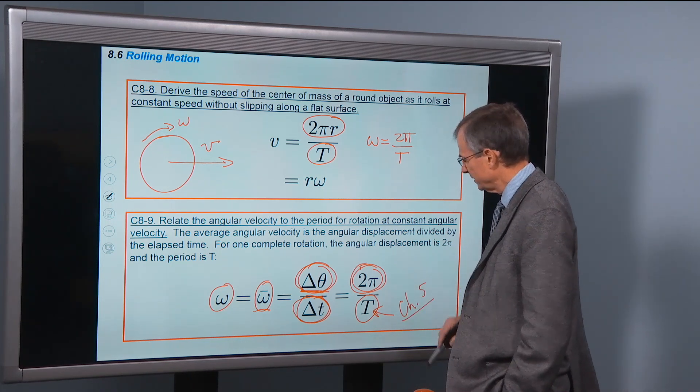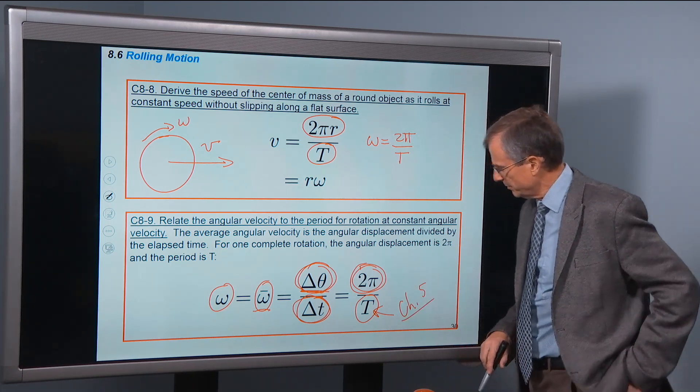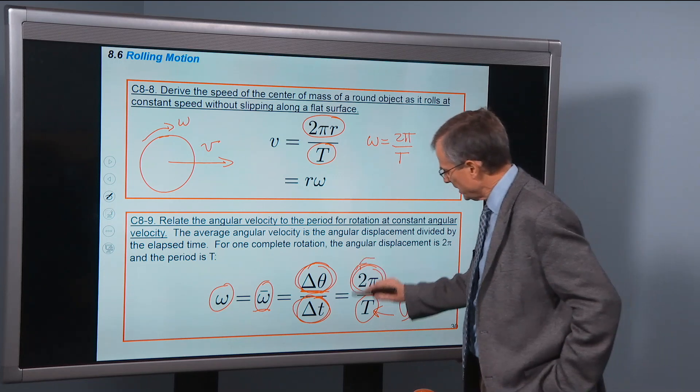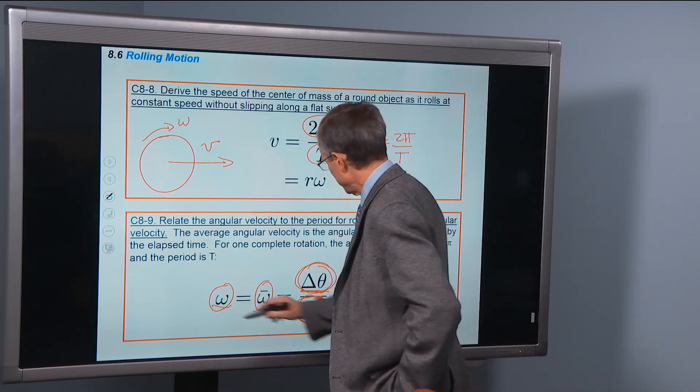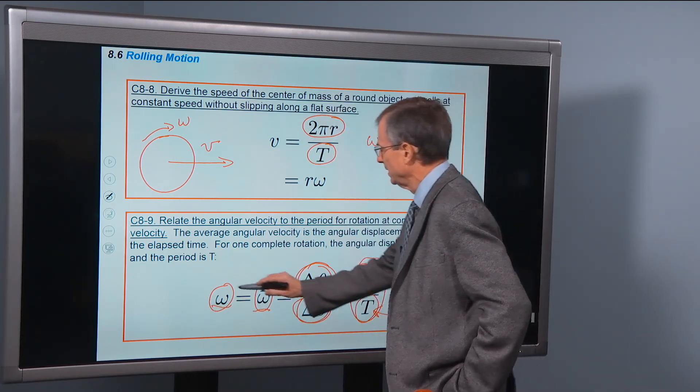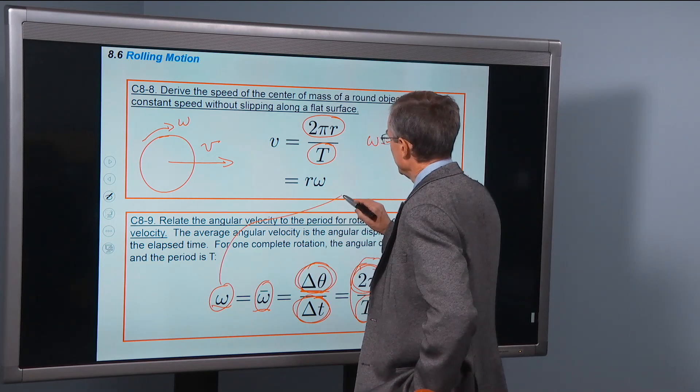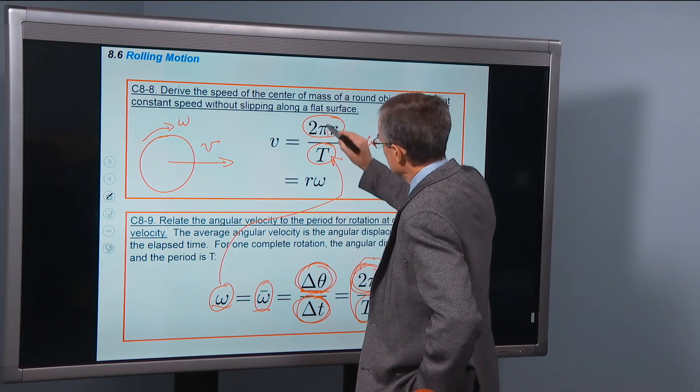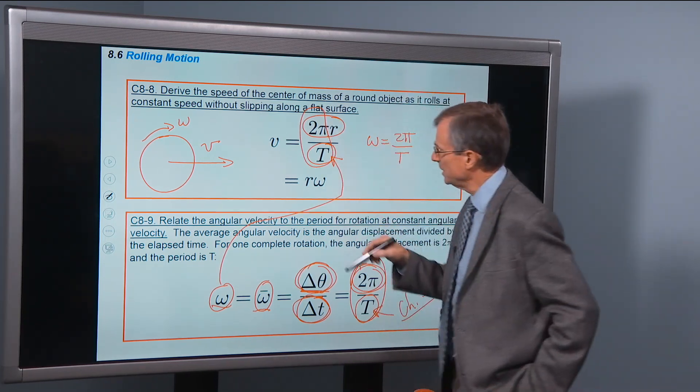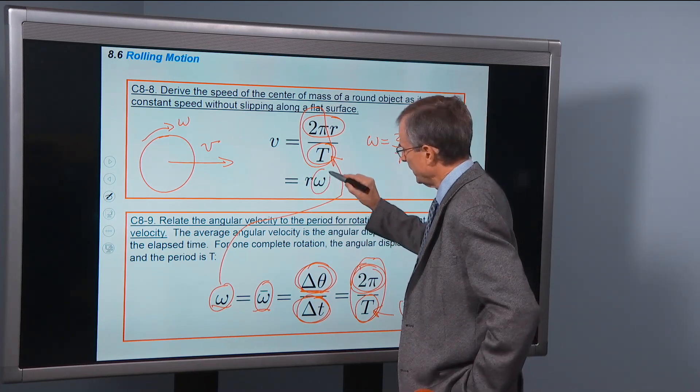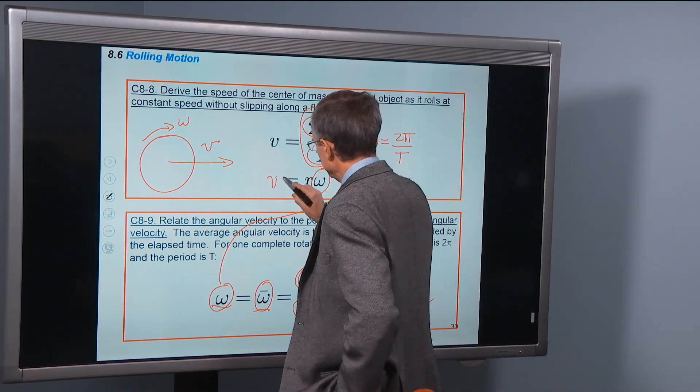We talked about the period of rotation. This concept now, that omega is 2 pi over t, that can go into here. So this 2 pi over t that appears here can be replaced by omega, and this is v equals r omega.